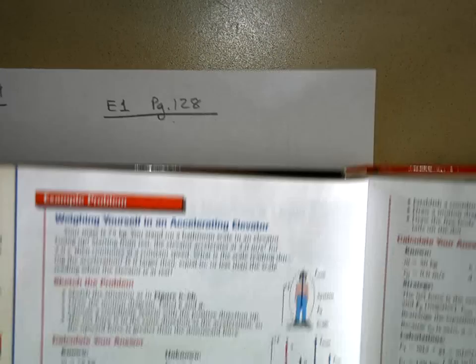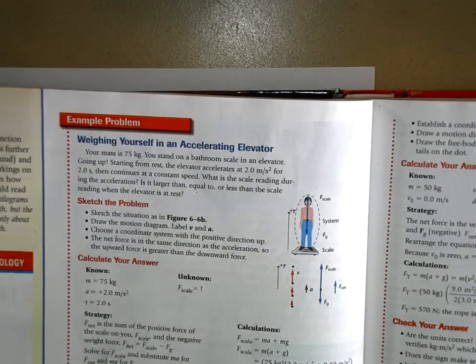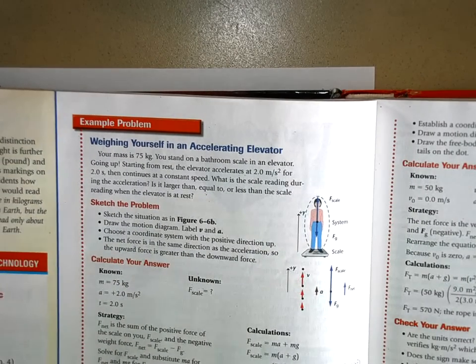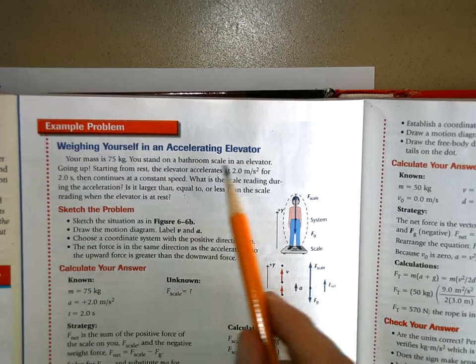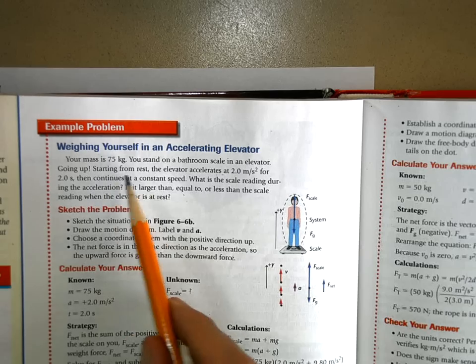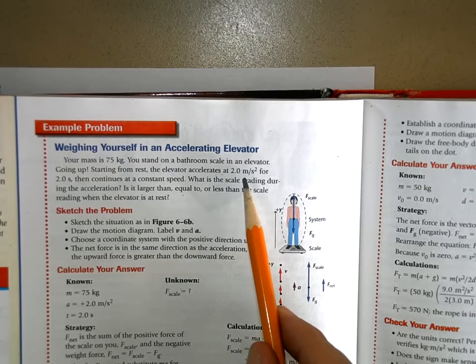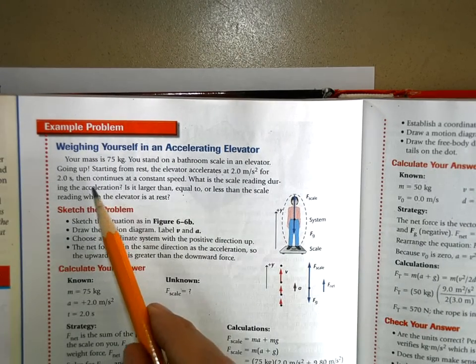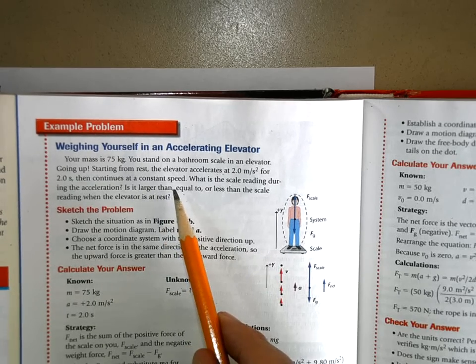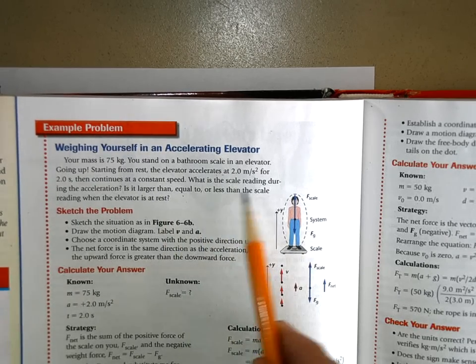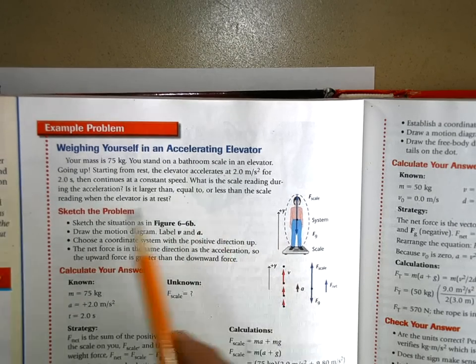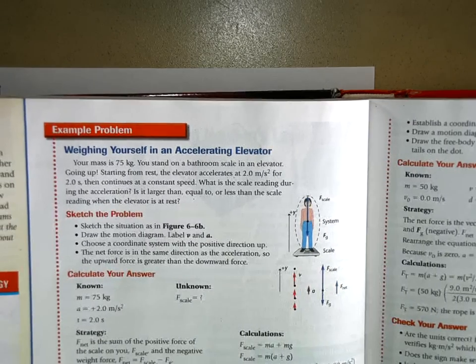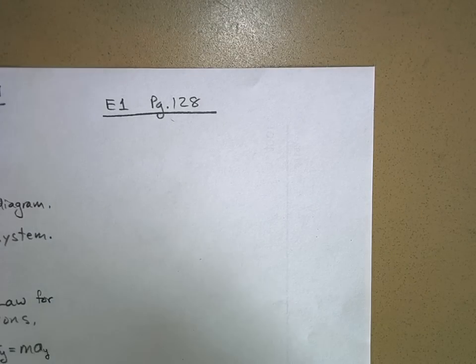Here it is in your book — it says 'Weighing Yourself in an Accelerating Elevator.' Your mass is 75 kilograms. You stand on a bathroom scale in an elevator going up, starting from rest. The elevator accelerates at 2 meters per second squared for two seconds, then continues at constant speed. What is the scale reading during the acceleration? Is it larger than, equal to, or less than the scale reading when the elevator is at rest? Let's apply the procedure to that problem.